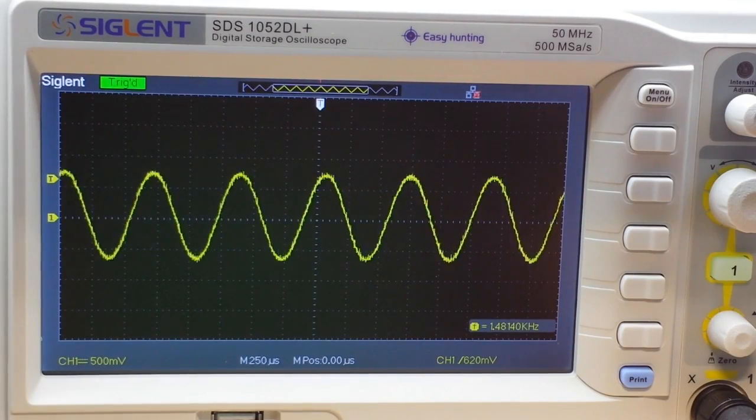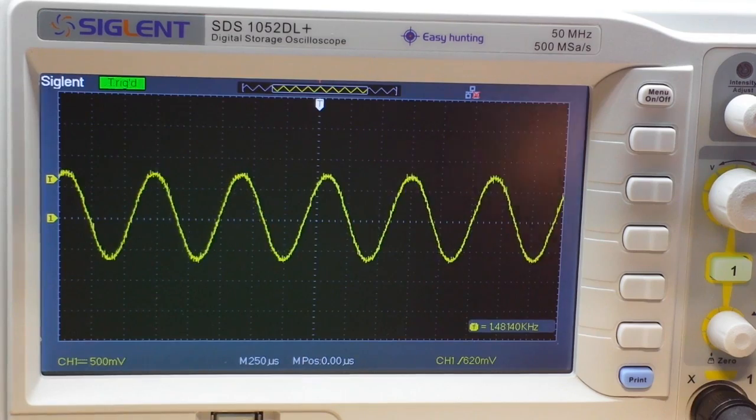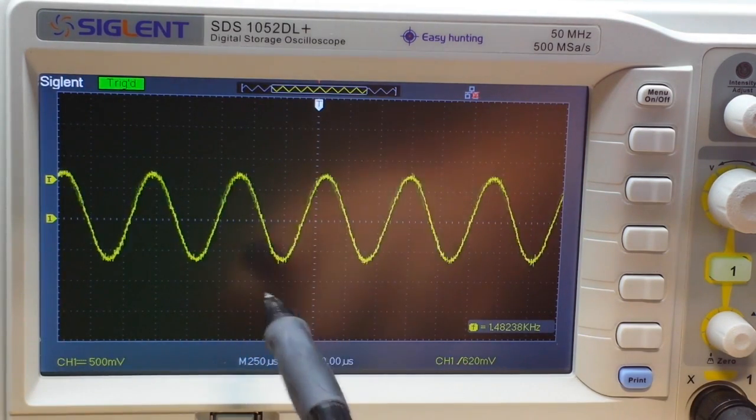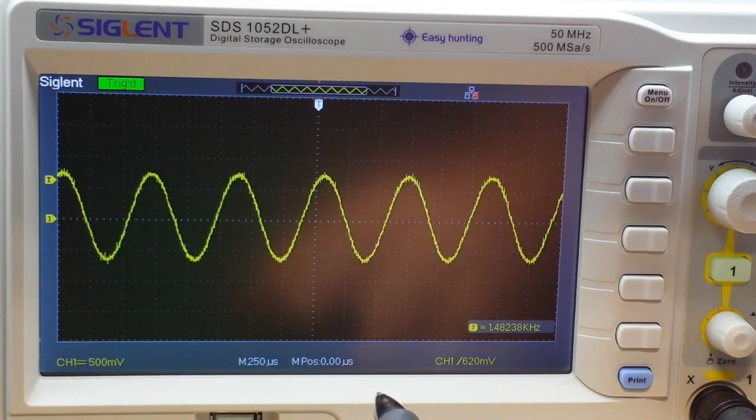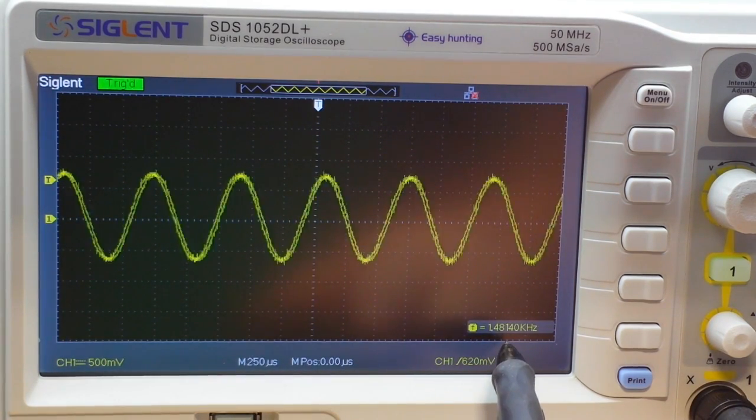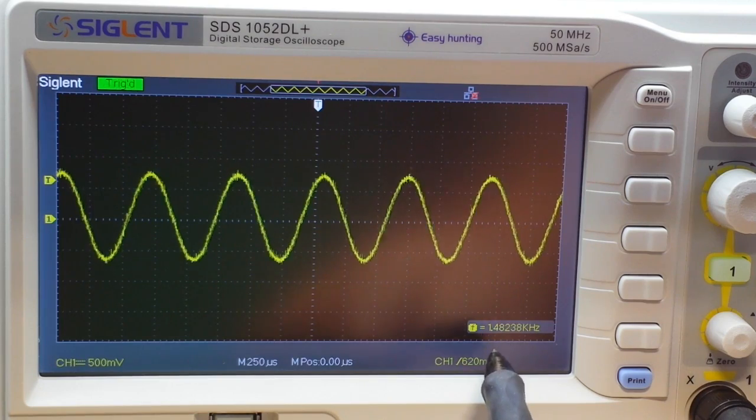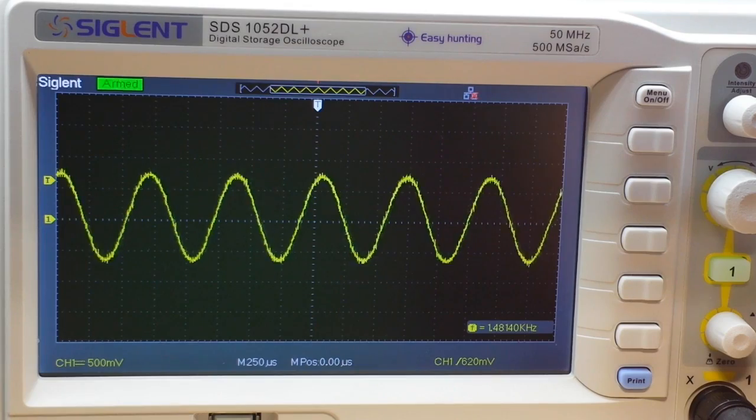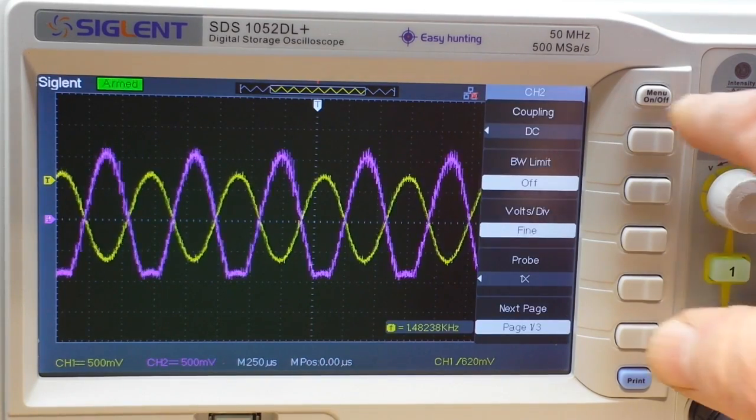All right, now you can see our input signal coming into the oscilloscope. It's a 1.5 kilohertz signal, so it's well within the audio range. You can see right there, volts per division are 500 millivolts. Now if we add in our output signal there...